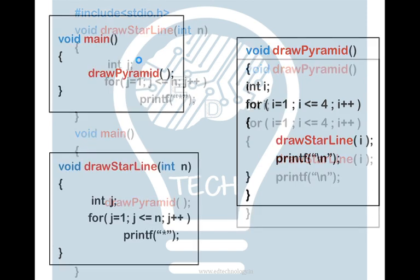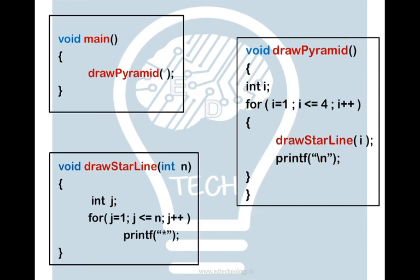This is nothing but nesting of the function. So here we have three different functions: void main, draw star line, and void draw pyramid. Within the draw pyramid we are calling the draw star line function. And within the void main we are calling the draw pyramid. Let us see how it works.